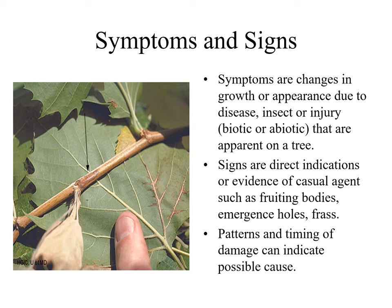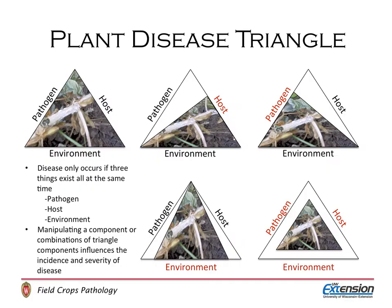Patterns and timing of damage can indicate the possible cause. When diagnosing and treating plant disease it is important to understand the plant disease triangle. Disease can only occur if these three things exist at the same time: a pathogen, a host, and a supporting environment. Manipulating a component or combinations of the triangle components influences the incidence and severity of the disease.